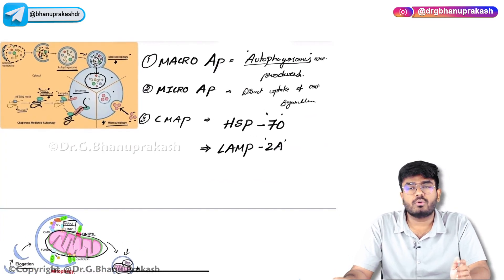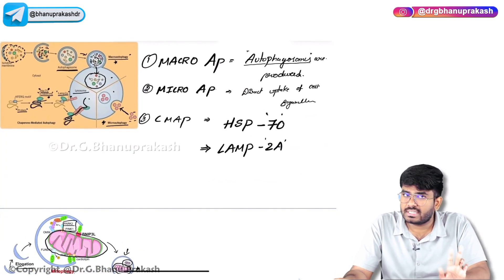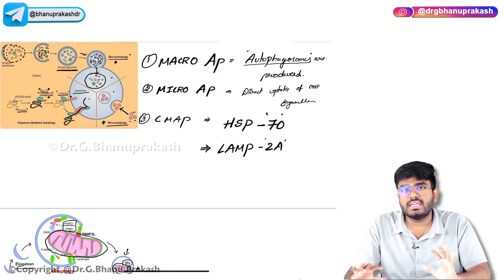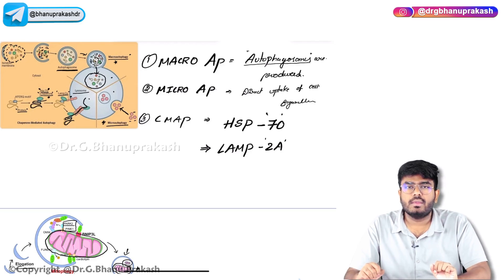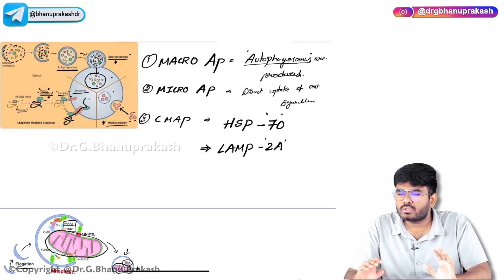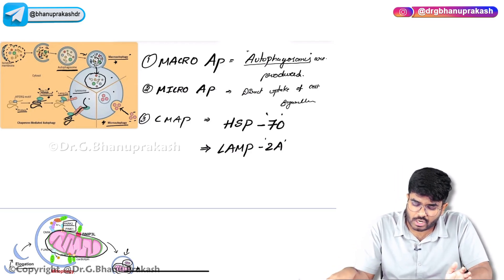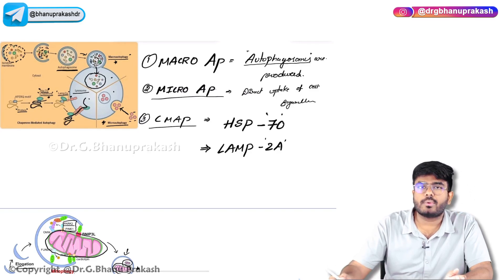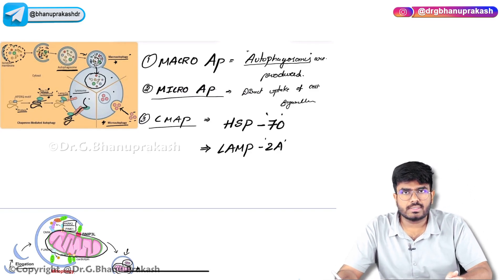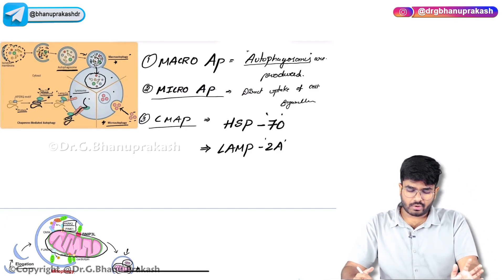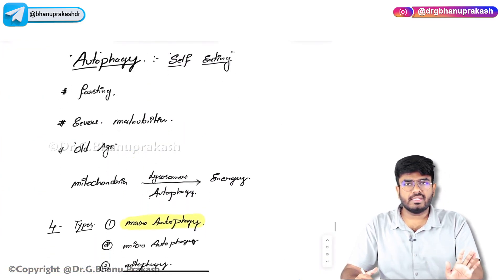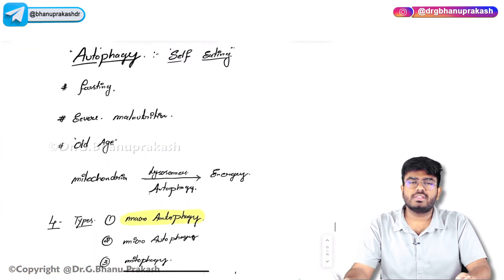Autophagosomes are produced in two types: macro autophagy as well as mitophagy. No autophagosome is formed in micro autophagy or chaperone-mediated autophagy. With this we have completed the topic of autophagy — that's the self-eating. Hope the video is helpful. Thank you.